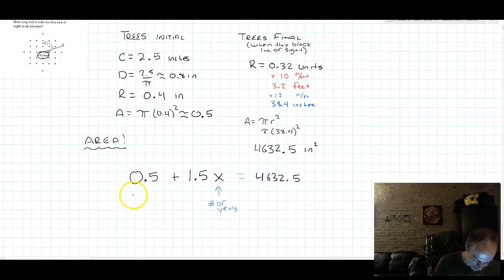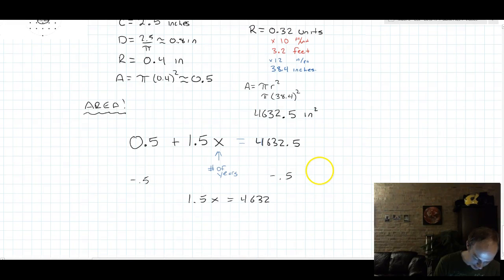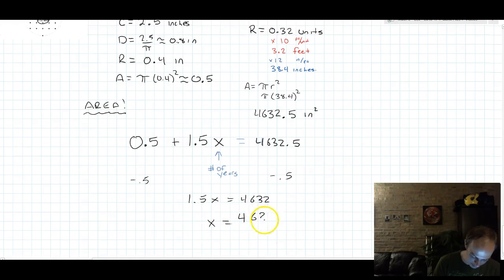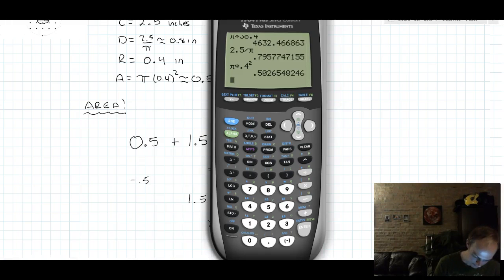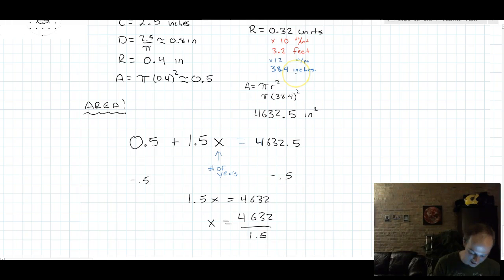To solve this linear equation, we'll subtract 0.5. So we get 1.5x equals 4,632. And then we'll take that number and say x is equal to 4,632 all divided by 1.5. 3,088 years.